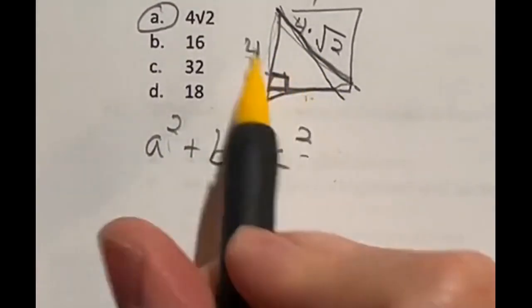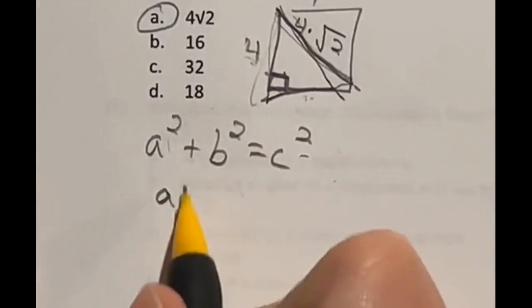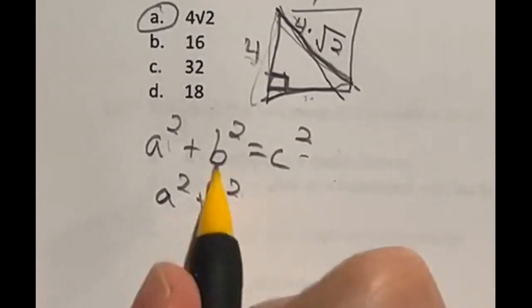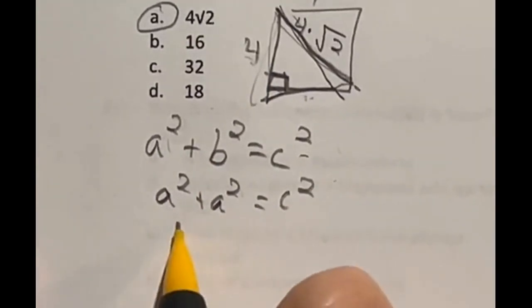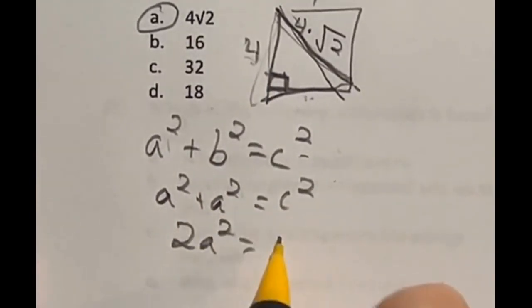So when we're looking at this, the sides on a square are the same. So really, this just becomes A squared plus A squared, since those are both the same thing. And that's equal to C squared. Well, if I combine these two, that gives me 2A squared equals C squared.